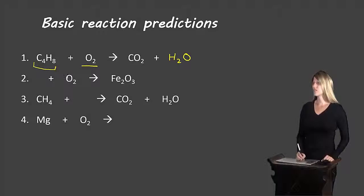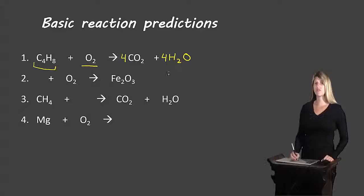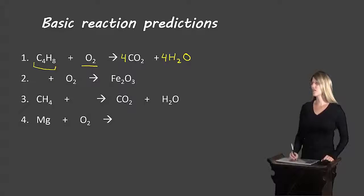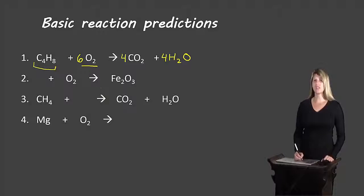To balance this reaction, we have 4 carbons on the left, so we put a coefficient of 4 in front of CO₂. We have 8 hydrogens on the left and 2 on the right, so a coefficient of 4 in front of H₂O gives us 8 hydrogens. Now we have 4×2 = 8 plus 4 = 12 oxygens on the right. We only have 2 on the left, so a coefficient of 6 gives us 6×2 = 12, so we have 12 oxygens on each side.